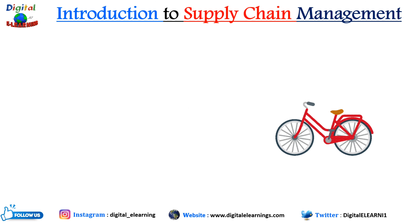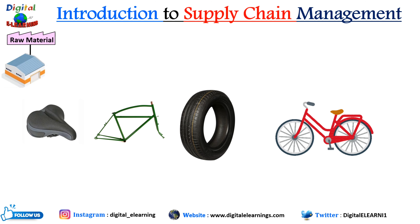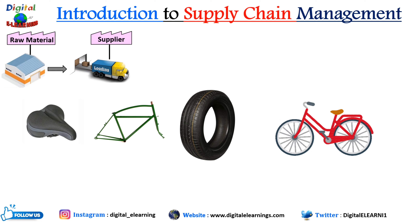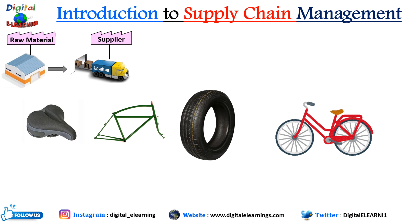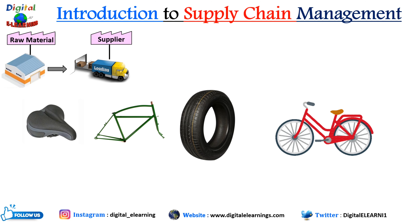Now imagine that you are manufacturing a bicycle from scratch. The first step in supply chain management is procurement — which is like going shopping for raw materials. You need metal for the frame, rubber for the tires, and plastic for the seat. You need to find suppliers who can provide those materials: one specializing in high-quality metals for bike frames, another in rubber for bike tires, and a third in plastics for bike seats. You then negotiate with each supplier to get the best price and terms.